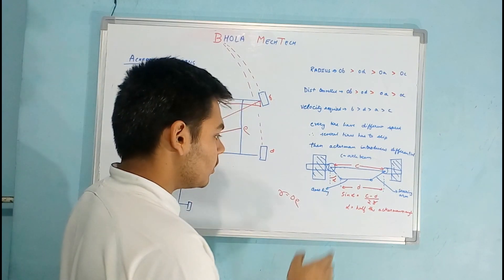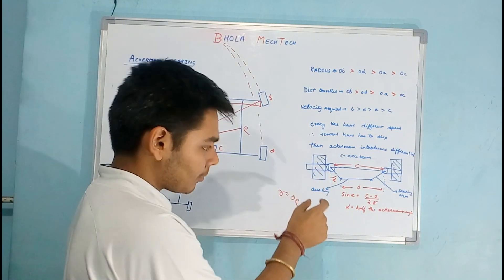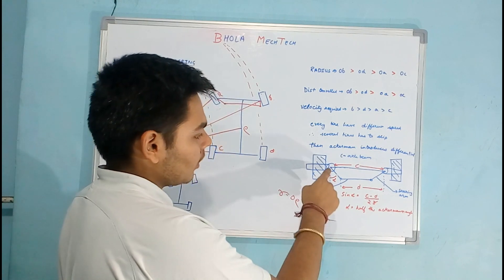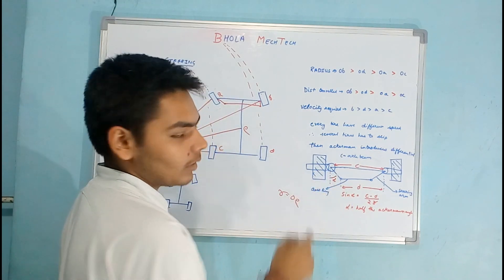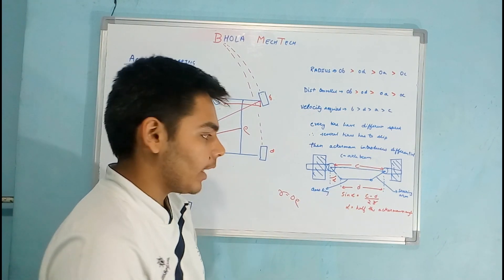From this end this is the stub axle and these are the beams. So the steering wheel must be having an angle alpha that is known as the half of the Ackermann angle.